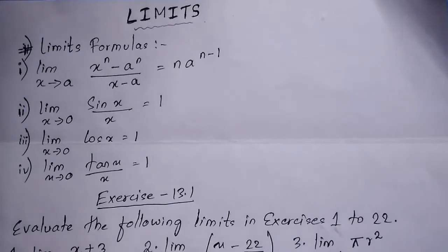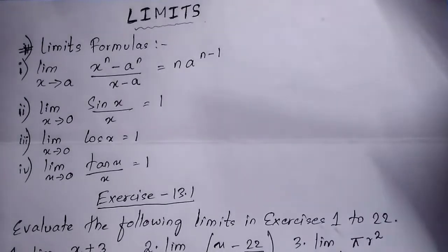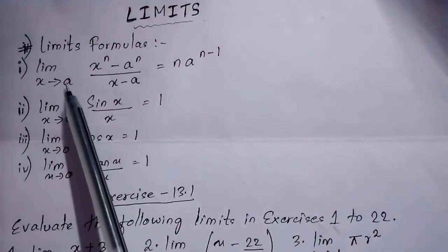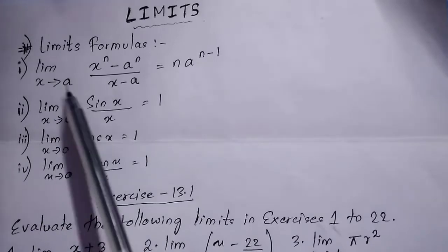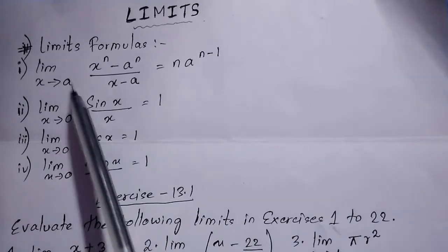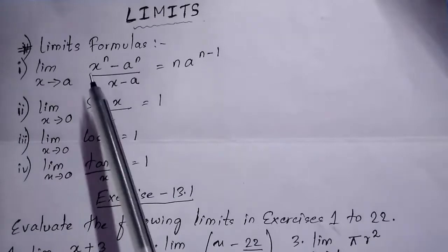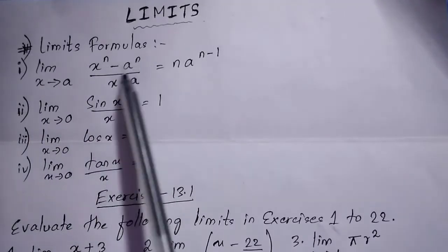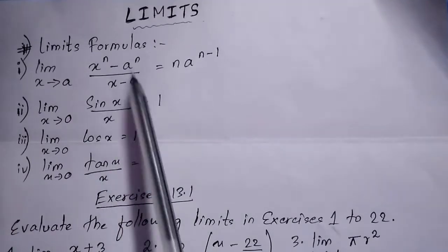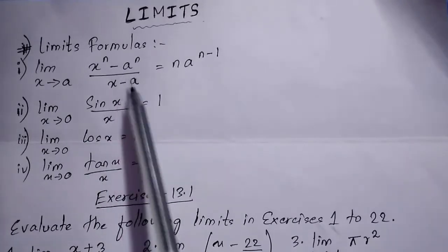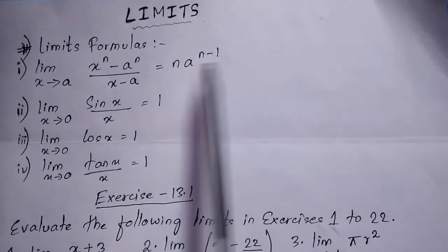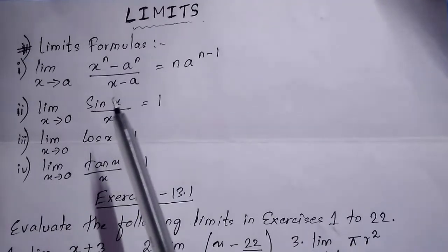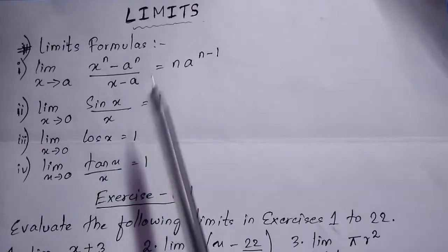First, let me explain the formulas for limits. The first formula: lim x→a of (x^n − a^n) divided by (x − a) equals n·a^(n−1). You have to read 'x→a' as 'x tends to a.' You need to memorize all these formulas. There are other formulas as well, but these are the important ones for now.